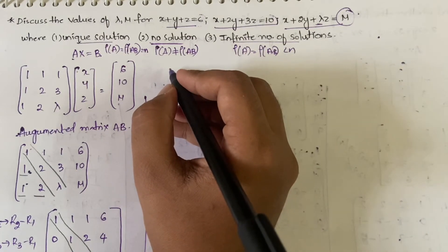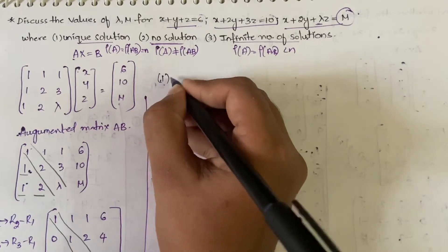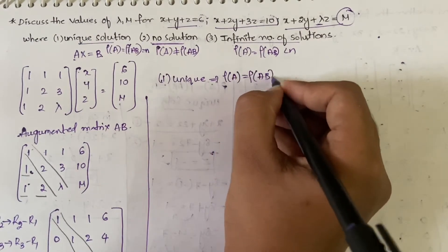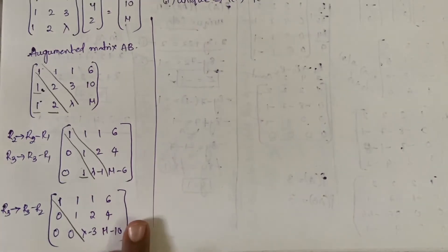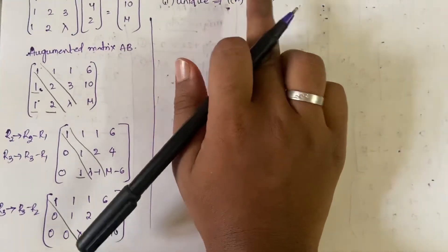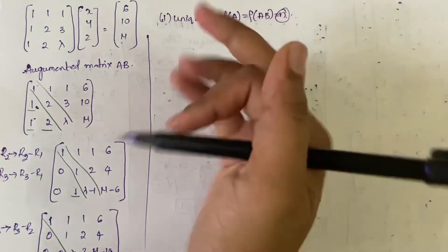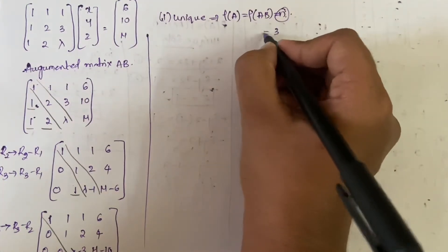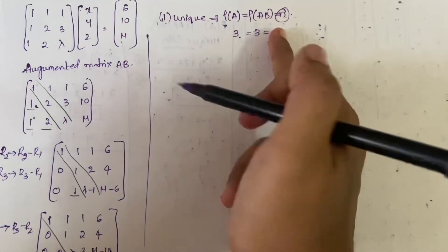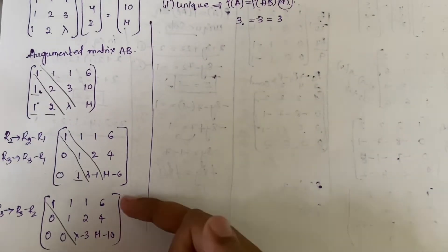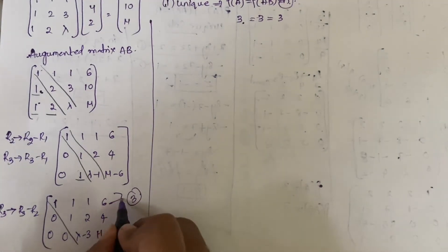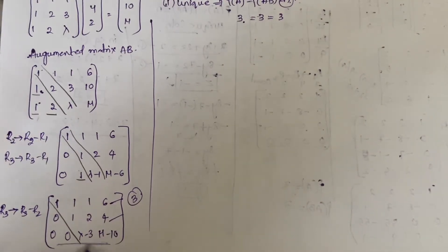For unique solution, rank(A) = rank([A|b]) = n = 3, since the number of unknowns x, y, z is 3. So the rank must be 3, which means there must be 3 non-zero rows in the matrix. The first two rows are already non-zero, so the third row must also be non-zero.